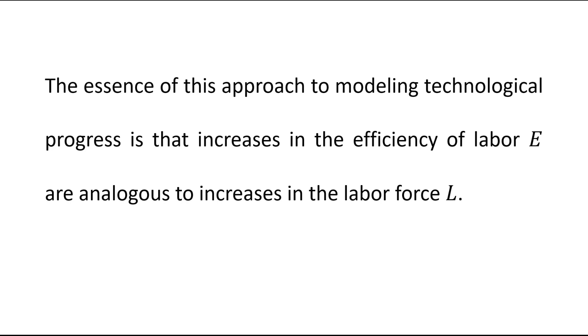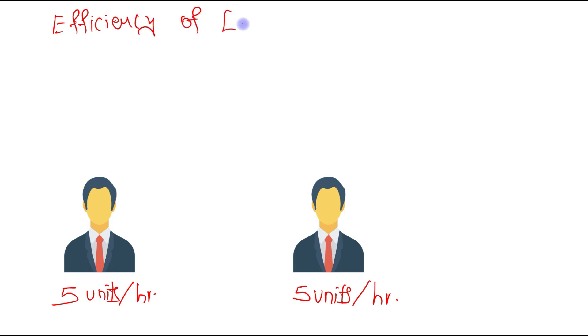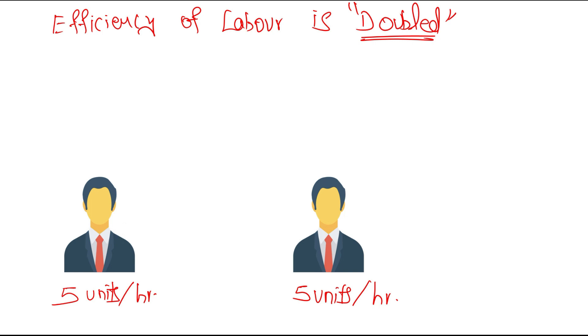The essence of this approach is that increases in the efficiency of labor E are analogous to increases in the labor force L. Suppose there are two workers, and each produces five units per hour. Now suppose that the efficiency of labor is doubled.